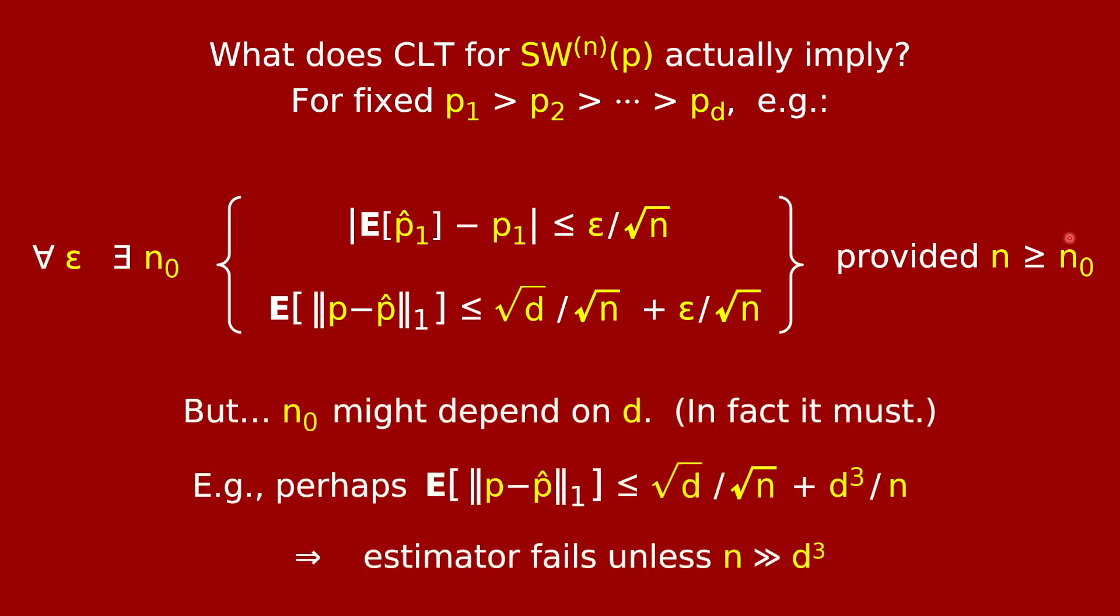But here's the catch. This n zero may well depend, for example, on d, the number of faces of the die. In fact, you can prove that it must depend on it. So although the error gets small as n goes to infinity, the rate at which it goes to infinity plays a big role potentially. For example, the following statement might well be true: that the expected value of this L1 error is at most root d over root n plus, say, d cubed over n. That kind of statement is completely consistent with the central limit theorem. But you see, if this statement happens to be true, then you don't have a small error unless n is much bigger than d cubed, which would even be worse than the d squared we talked about on the last slide.